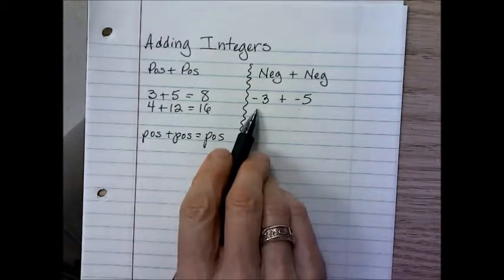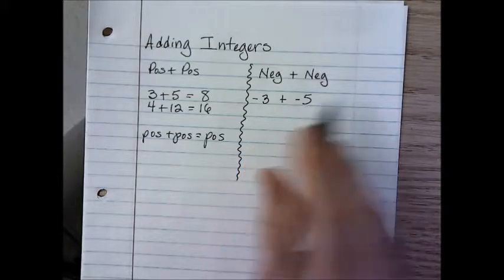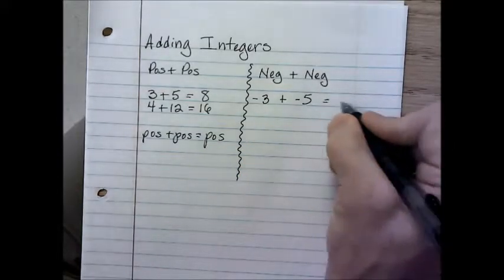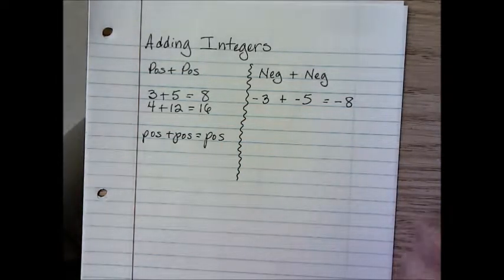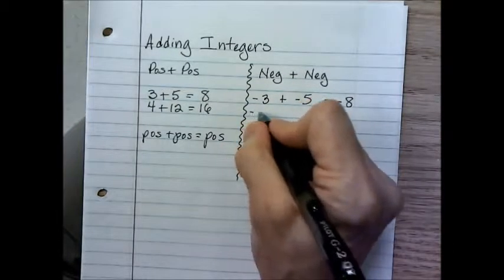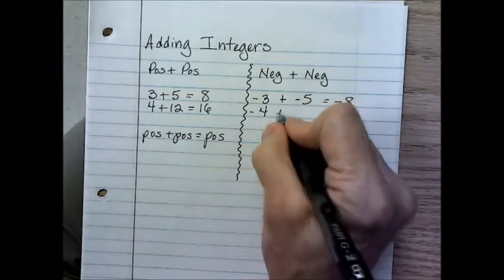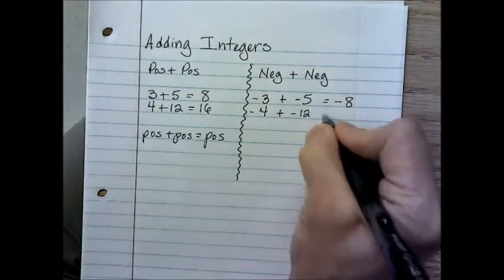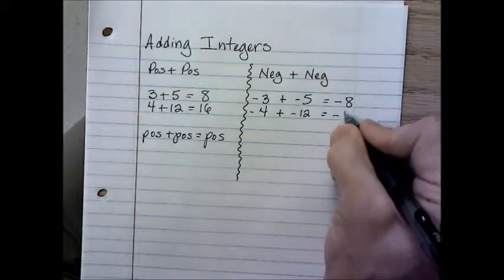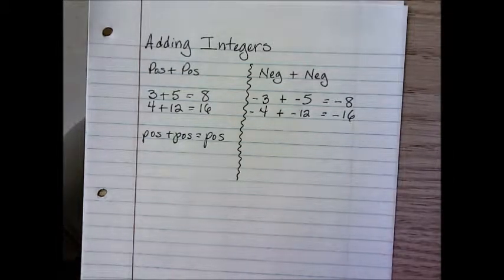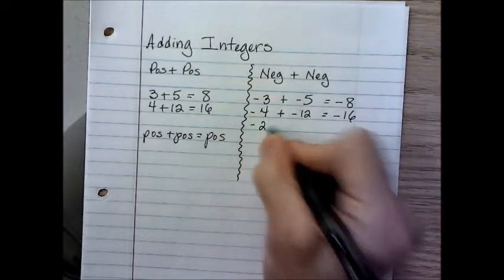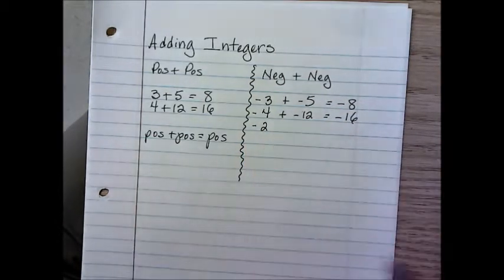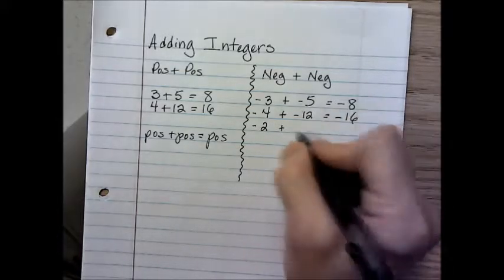Now let's talk about when we add a negative plus a negative. If we added negative 3 plus negative 5 — negative 3 is like owing somebody $3, and you owe another person $5, so altogether you would owe $8. Negative 3 plus negative 5 equals negative 8. If you owed somebody $4 and you owed someone $12, you would owe $16 altogether.